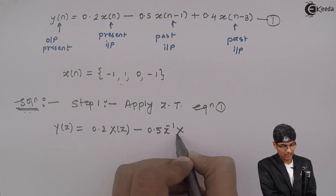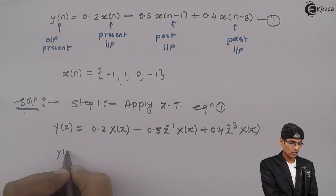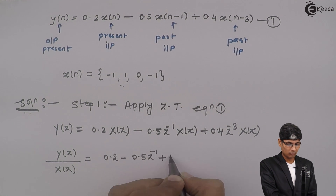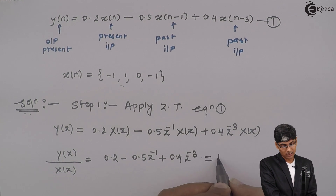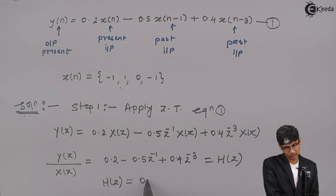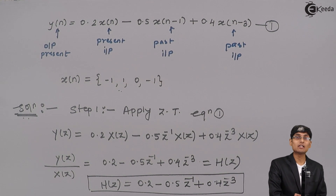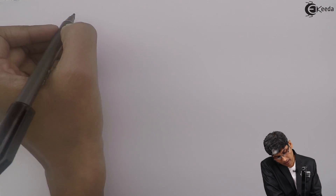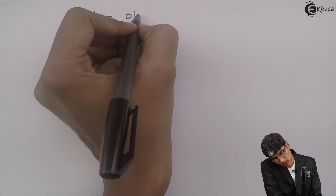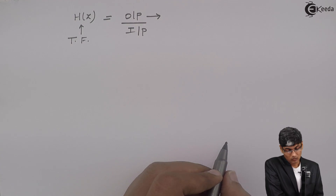So I get Y(z) = 0.2X(z) - 0.5z⁻¹X(z) + 0.4z⁻³X(z). Therefore Y(z)/X(z) = 0.2 - 0.5z⁻¹ + 0.4z⁻³, which is nothing but H(z). So H(z) of the system is 0.2 - 0.5z⁻¹ + 0.4z⁻³. This is my transfer function. H(z) is equal to output upon input.